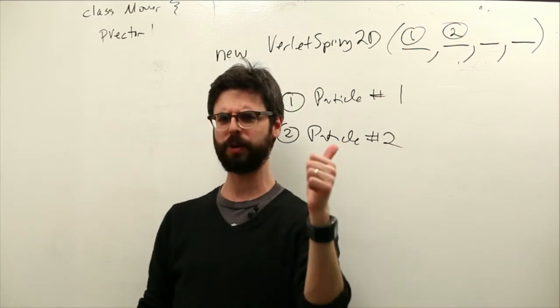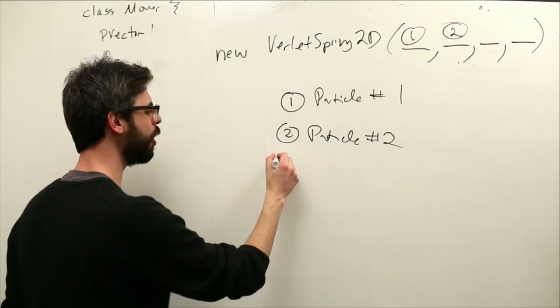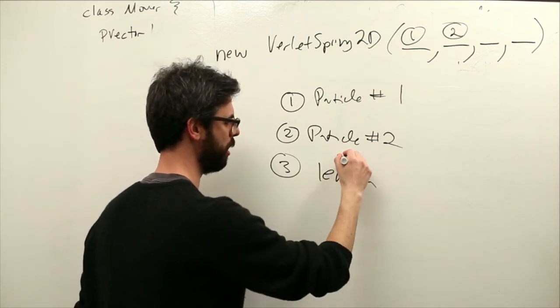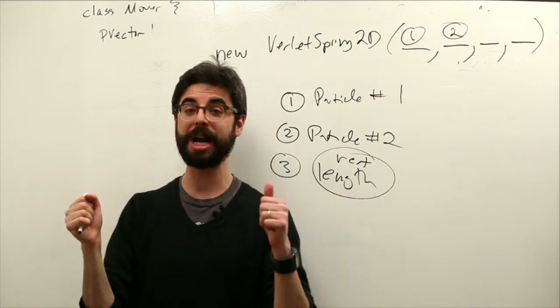So we pass in those references as the first two arguments to creating a spring. So we make a spring, we say spring between particle one and a spring between particle two.